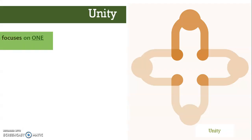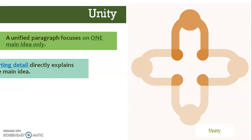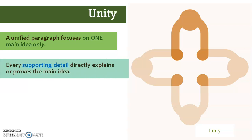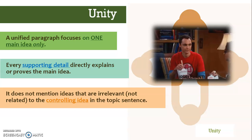Therefore, a unified paragraph focuses on one main idea only — that is, every supporting detail directly explains or proves the main idea. Hence, it does not mention ideas that are irrelevant or not related to the controlling idea in the topic sentence.